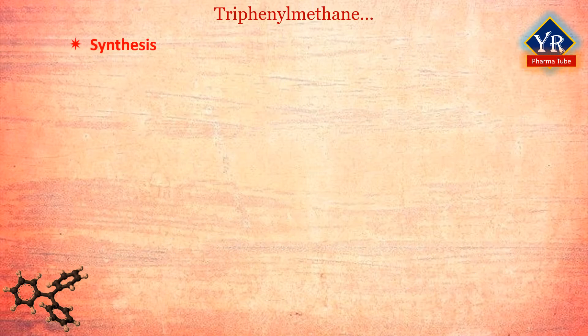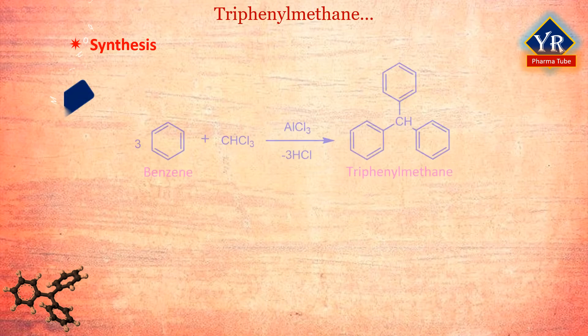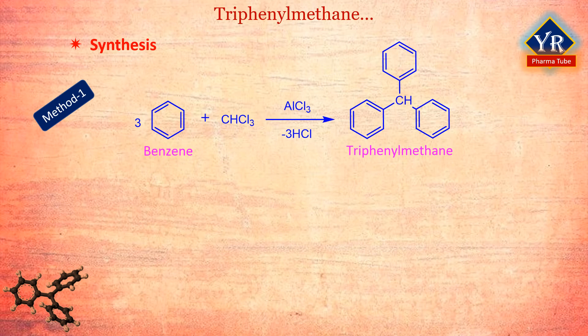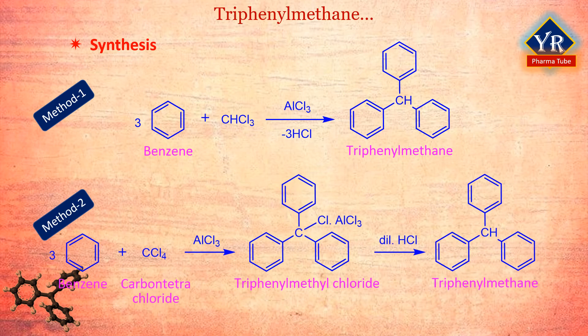Many triarylmethane dyes are pH indicators and some display fluorescence. Triphenylmethane was first synthesized in 1872 by Kekulé by heating diphenylmercury with benzaldehyde. It can be synthesized by Friedel-Crafts condensation from benzene and chloroform with an aluminum chloride catalyst. Alternatively, benzene may react with carbon tetrachloride using the same catalyst to obtain the triphenylmethyl chloride–aluminum chloride adduct, which is then hydrolyzed with dilute acid. Synthesis from benzylidene, prepared from benzaldehyde and phosphorus pentachloride, is also used.